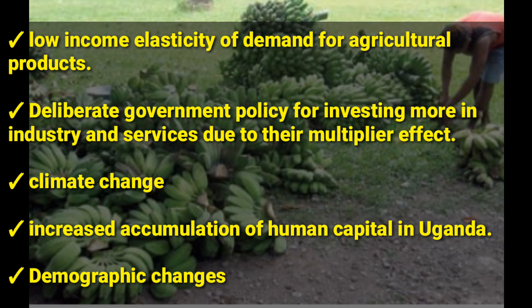Another reason is increased accumulation of human capital in Uganda. As more Ugandans continue to go to school and attain skills applicable off the land, it influences the rate of agriculture to decline. After graduation, few would want to go back to farming. Human capital — meaning skills and knowledge — has led to the reduced contribution of agriculture to GDP.